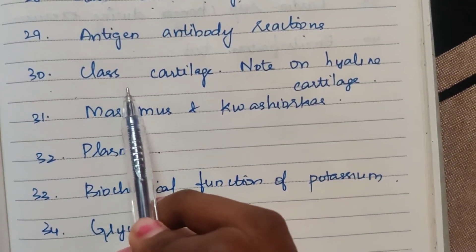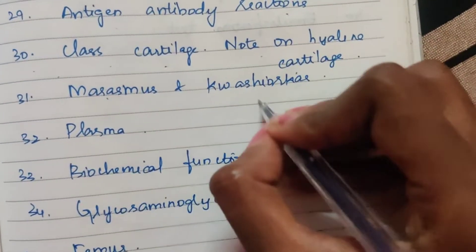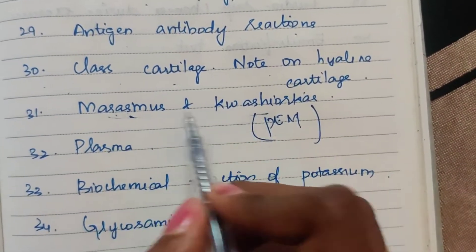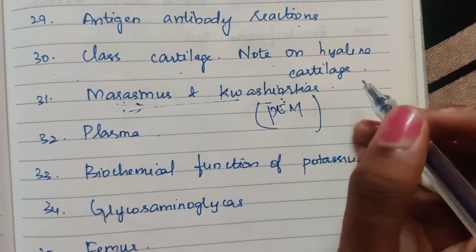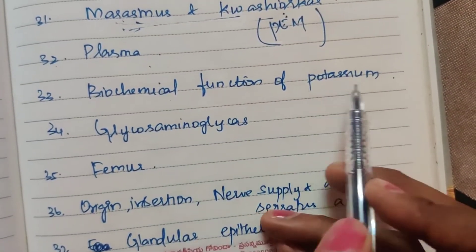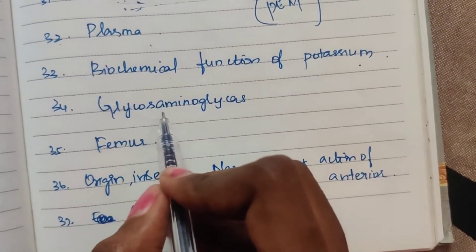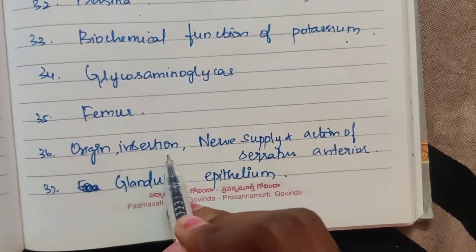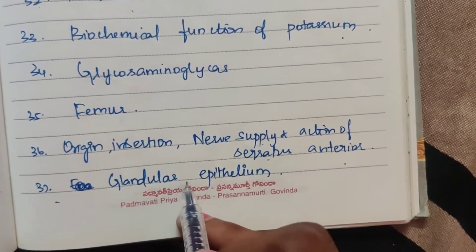Twenty-ninth: antigen-antibody reaction. Thirtieth: classify cartilage and add a note on hyaline cartilage. Thirty-first: marasmus and kwashiorkor — that is PEM, protein energy malnutrition — this is very important and you should always know it. Thirty-second: plasma. Thirty-third: biochemical function of potassium. Thirty-fourth: glycosaminoglycans. Thirty-fifth: femur.